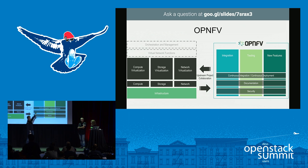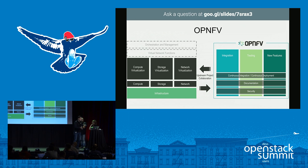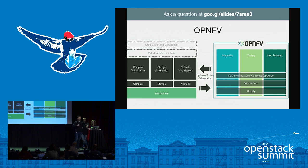We do this through integration and a lot of testing. We bring all of the Tempest tests in and then write our own end-to-end tests. One key area for us is the continuous integration, continuous deployment pipeline. We work very closely with the OpenStack team on this, trying to make it as easy as possible to build a cloud. We deploy over 10,000 clouds a year in our labs, all based on these 47 different flavors, through aggressive automation.